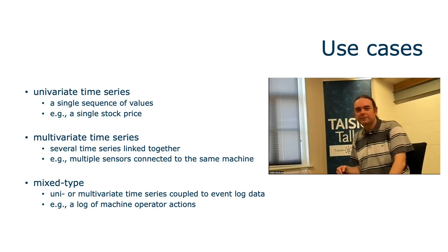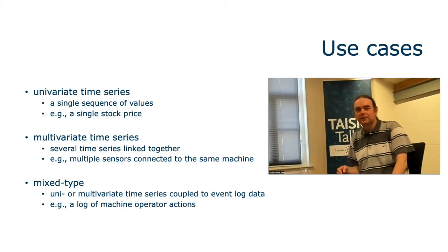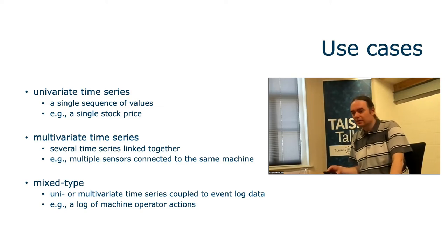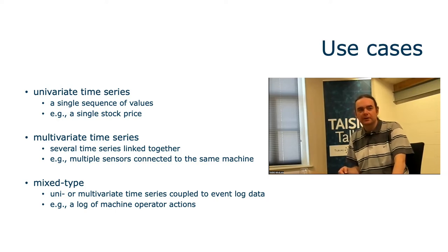There are different types of time series — three different use cases. The first is the simple case: univariate time series, where your data consists only of a single sequence of values. For example, a single stock price, where your dataset could then contain multiple stock prices, each considered a univariate time series.